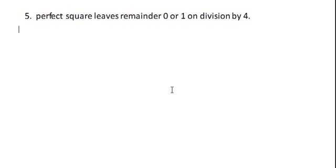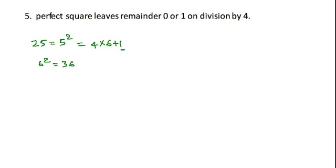A perfect square leaves a remainder of 0 or 1 on division by 4. For example, 25 equals 5 squared and can be written as 4 × 6 plus 1, leaving remainder 1. 6 squared equals 36, which can be written as 4 × 9 with remainder 0. Therefore, if a number divided by 4 leaves a remainder of 2 or 3, then it is not a perfect square.